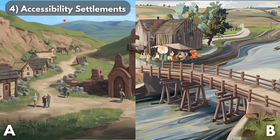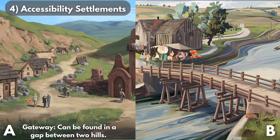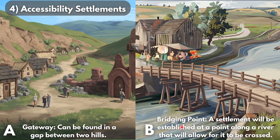Now we are looking at accessibility settlements. We have two types: Type A and Type B. Type A is known as a gateway settlement, which can be found in a gap between two hills. As you can see in this image, there are two hills and this settlement is found in the gap between those two. Type B is known as a bridging point. A bridging point is a settlement established at a point along a river that allows for it to be crossed — generally at an area where the river is very shallow, which is why people are able to cross it.